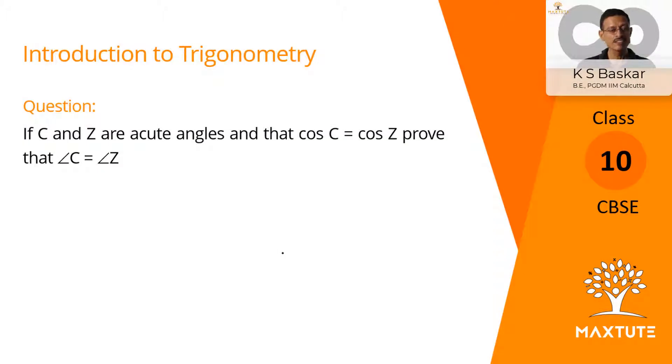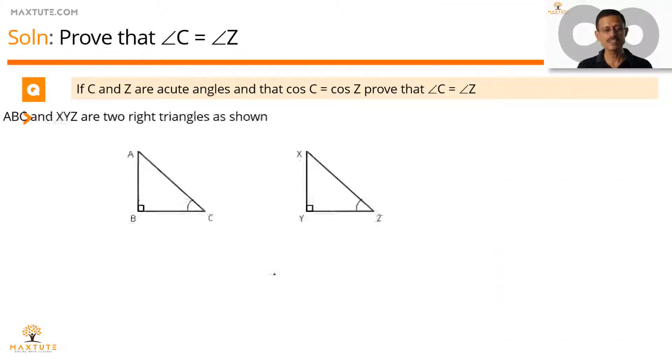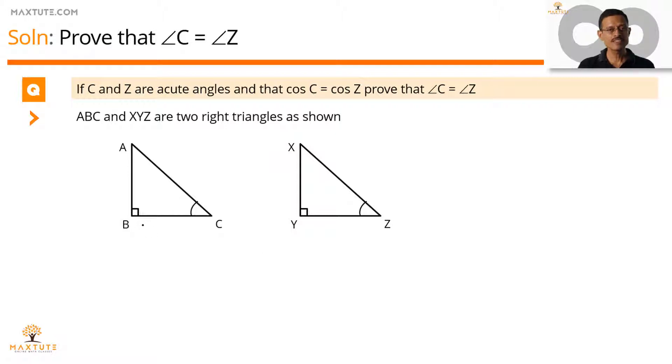This is an interesting question. If C and Z are acute angles and cos C is equal to cos Z, what we need to prove is that angle C is equal to angle Z. Let's get started by drawing two right triangles ABC and XYZ. ABC is right angled at B, XYZ is right angled at Y.